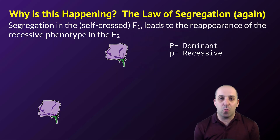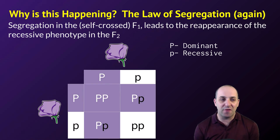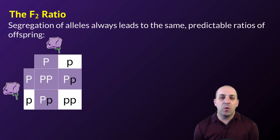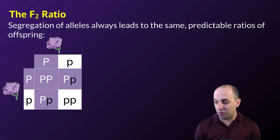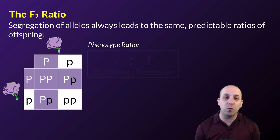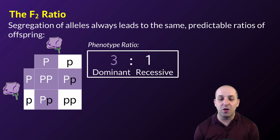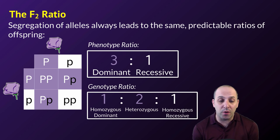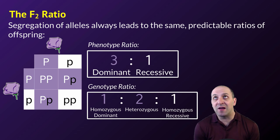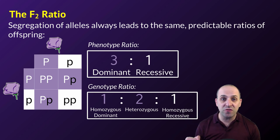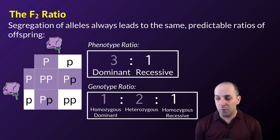Looking at the F1s — what's happening there to lead to the white reappearing is segregation again. When the F1s make gametes, they segregate their alleles. Using a Punnett square, each parent makes a big P and a little p allele, and they come together in four possible combinations. Because of that, we get predictable ratios: crossing two heterozygotes always gives a 3-to-1 ratio of dominant to recessive phenotype, and a 1-to-2-to-1 ratio of homozygous dominant to heterozygous to homozygous recessive.